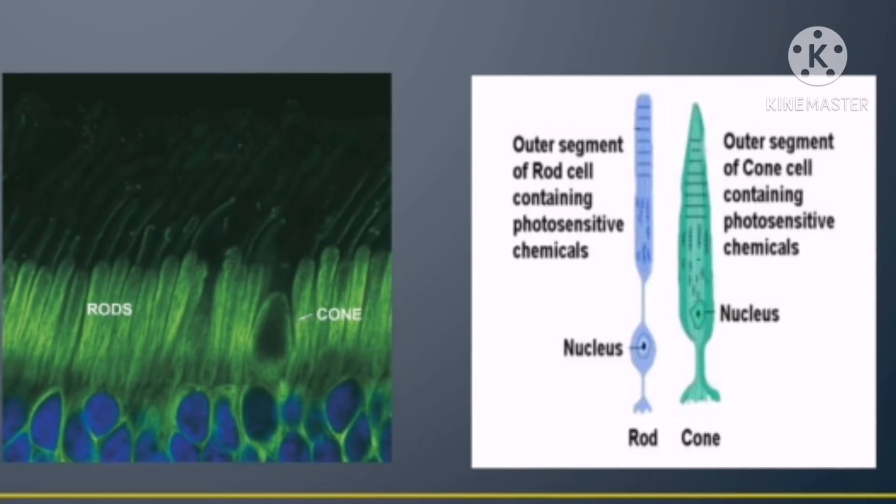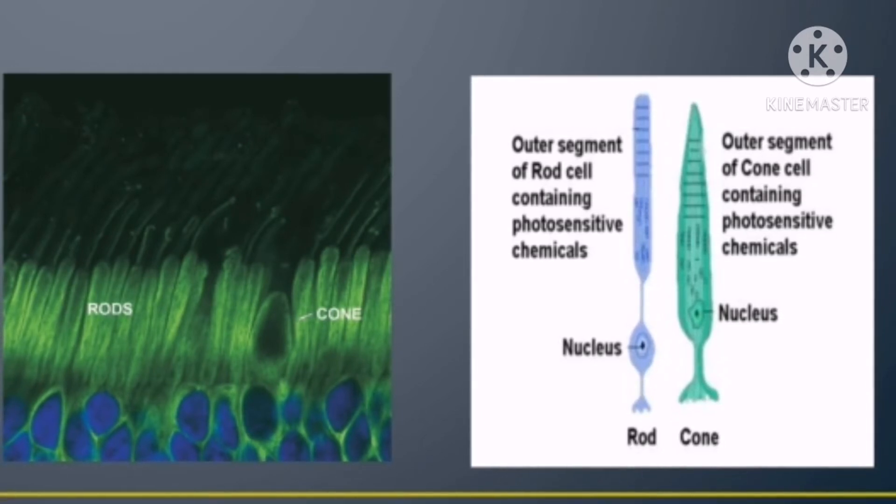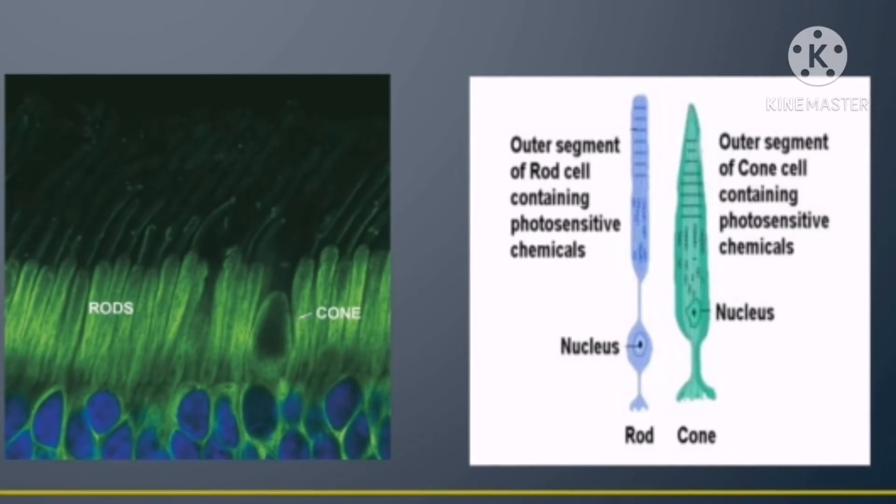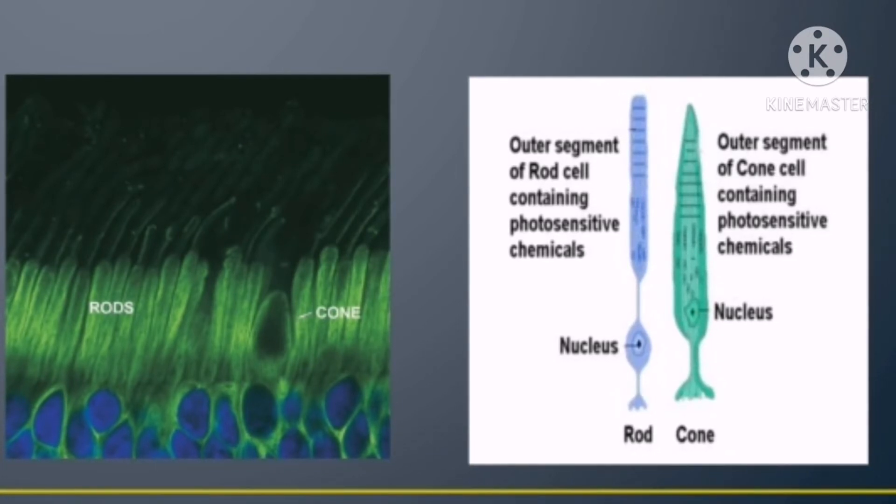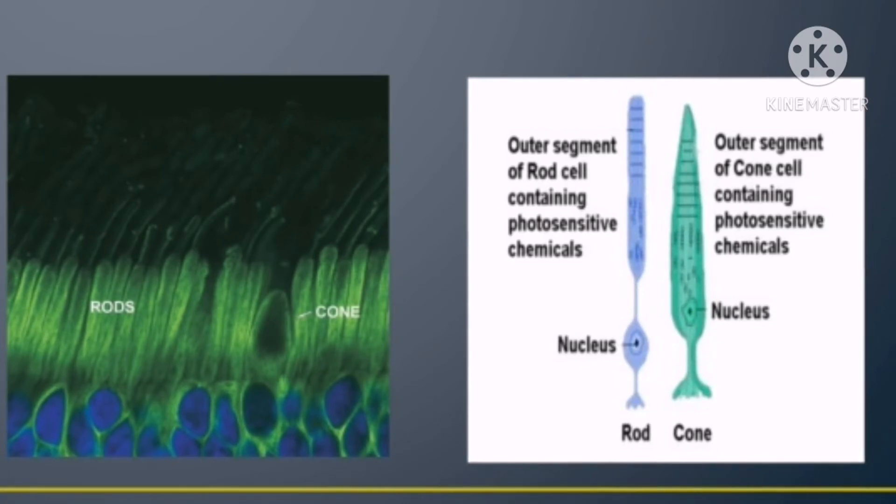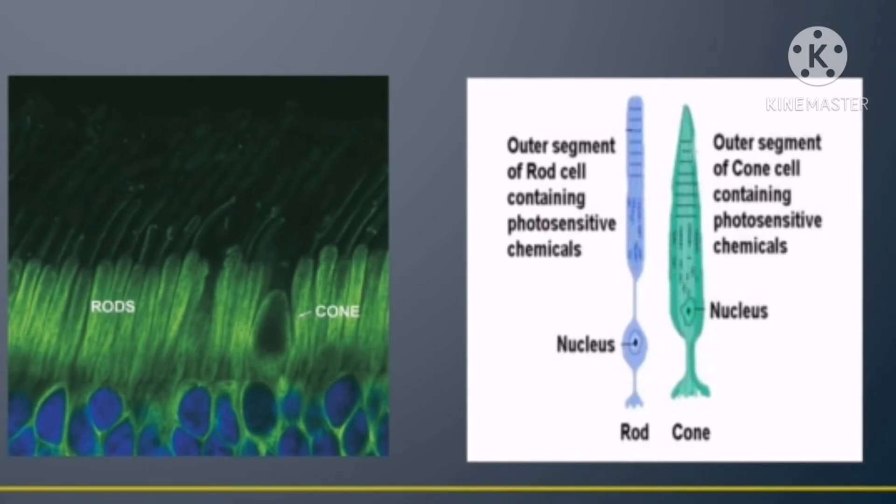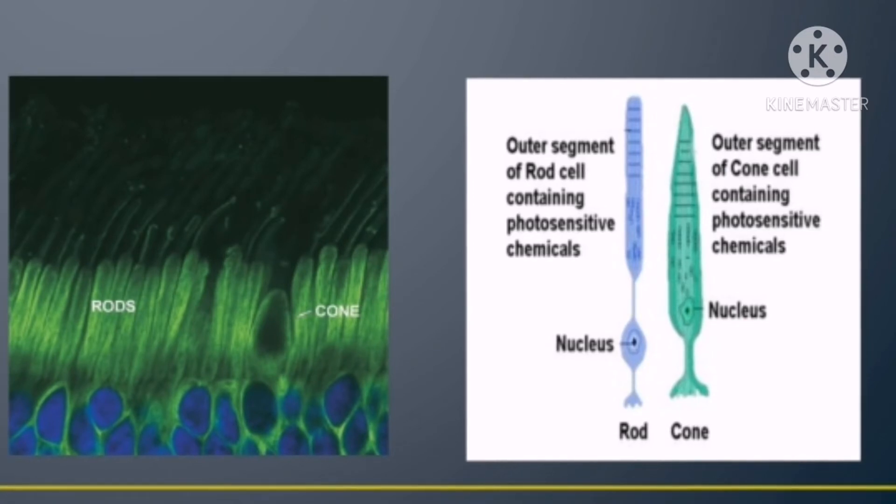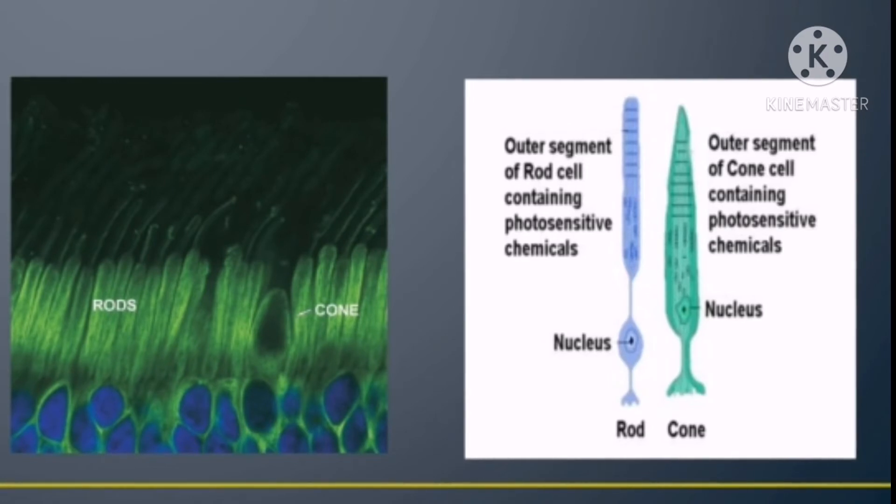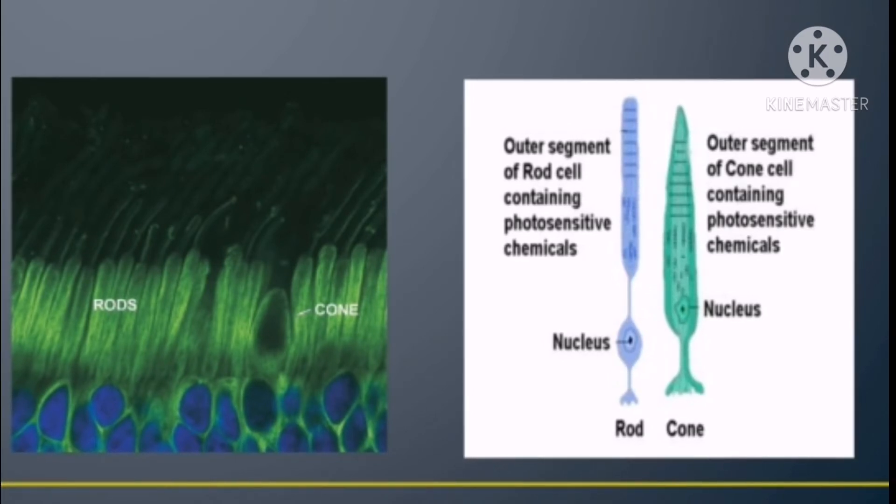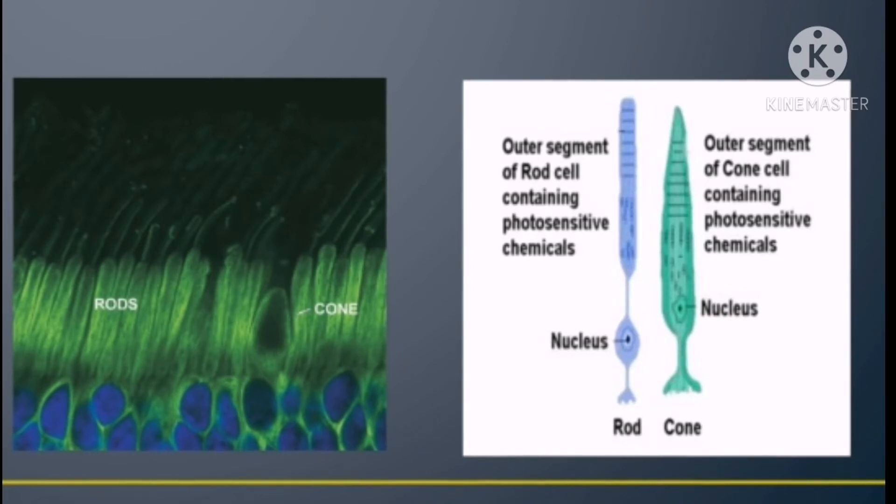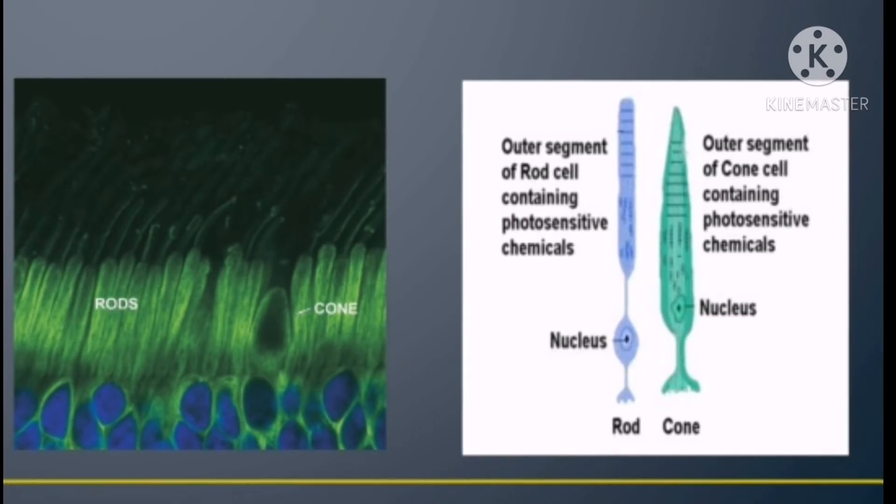There are two types of photoreceptors. The first one is rods that allow us to see in dim light. The next one is cones that allow us to see colors. The optic nerve sends signals to the brain which are perceived as color, light, and darkness. Then the brain interprets the signals and forms the image that is seen.